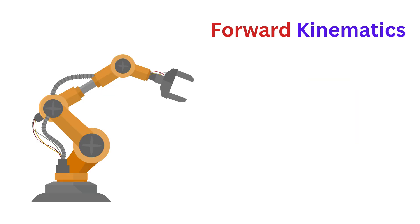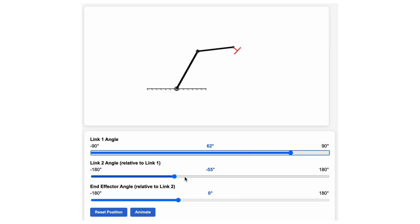Suppose this is our robot. Then simply put, forward kinematics is like figuring out where the tip of a robot's arm, which we call an end effector like a gripper, ends up when you translate and rotate each of its joints in a fixed coordinate frame.